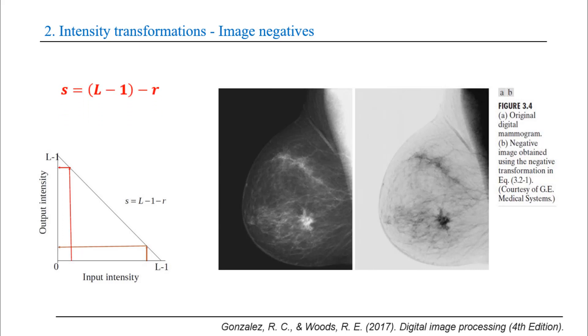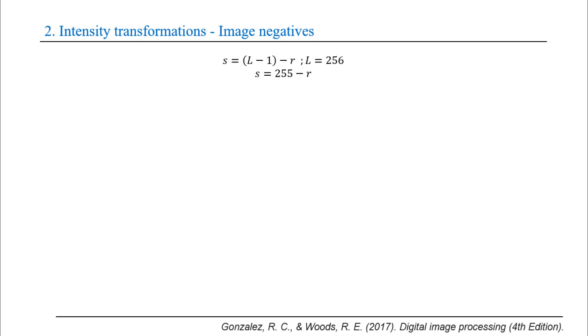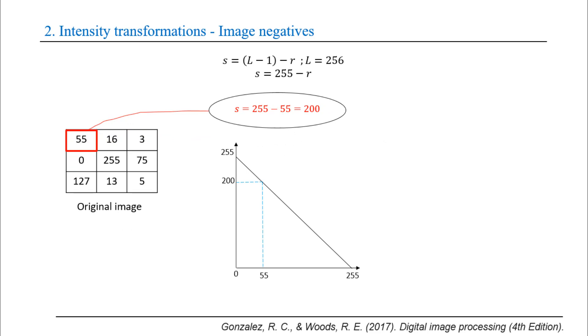The equation is s equals L minus 1 minus r. In grayscale images, L equals 255, which is the highest intensity, so the equation becomes s equals 255 minus r. For example, if we have an image like this and we want the negative, we apply the equation.